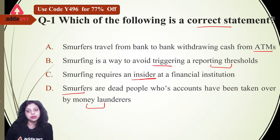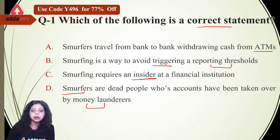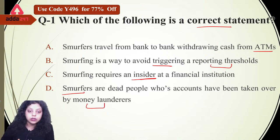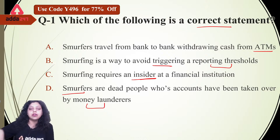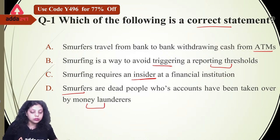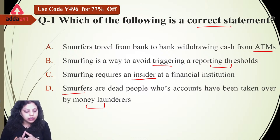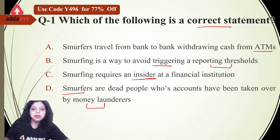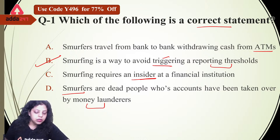The third option says smurfing requires an insider person at a financial institution — you may have heard of insider trading in the capital market, where selling and purchasing of a security on the basis of internal information is known as insider trading. Similarly here, when an insider gives you information on how to do the smurfing, that is smurfing. The fourth option says smurfs are dead people whose accounts have been taken over by money launderers — this obviously cannot be correct, as the amounts would go to the RBI or to the nominee. So the right answer is B: smurfing is a way to avoid triggering a reporting threshold.